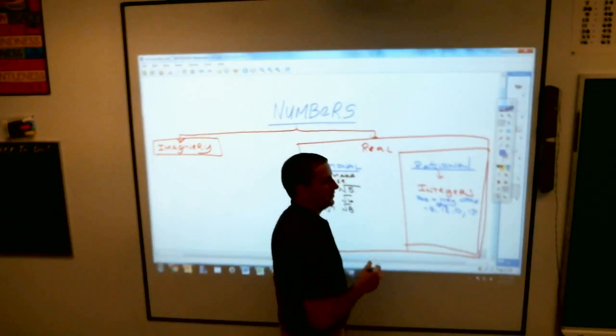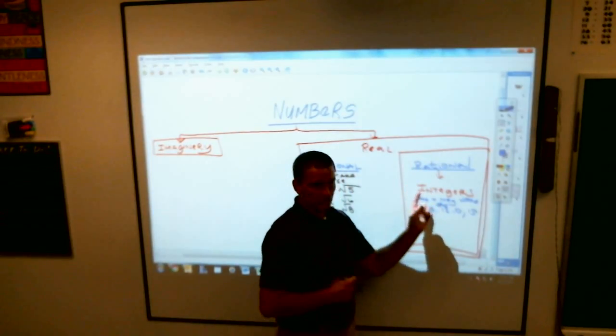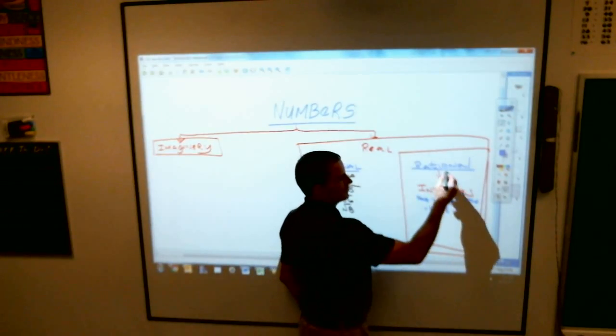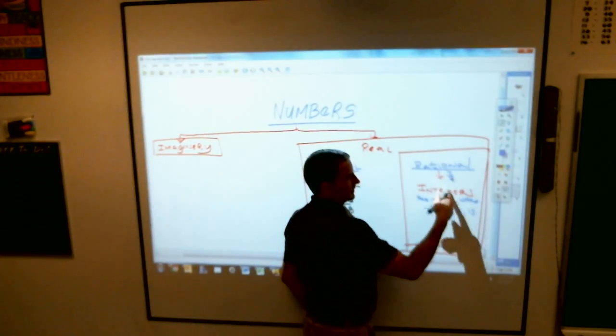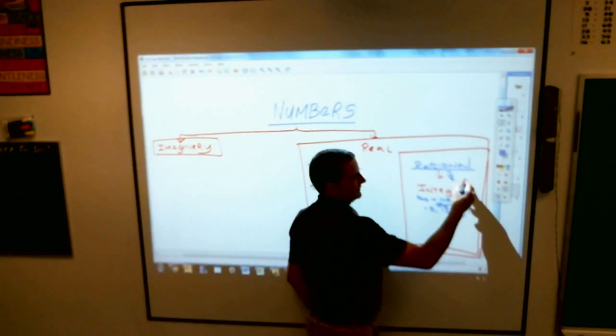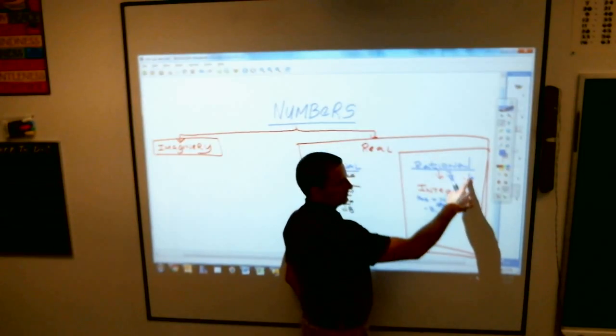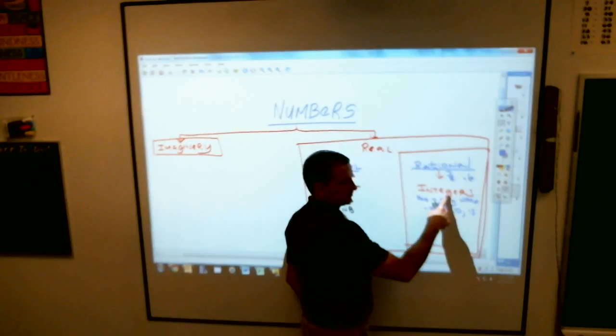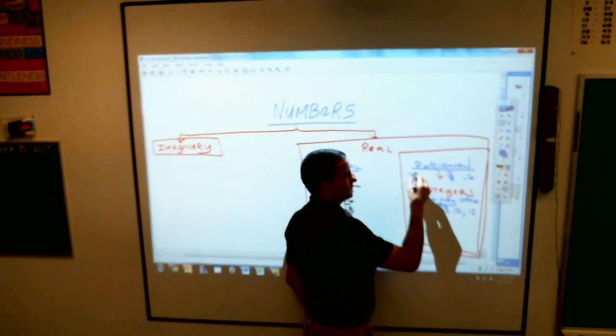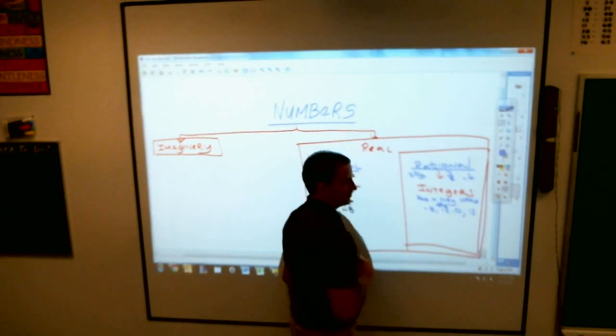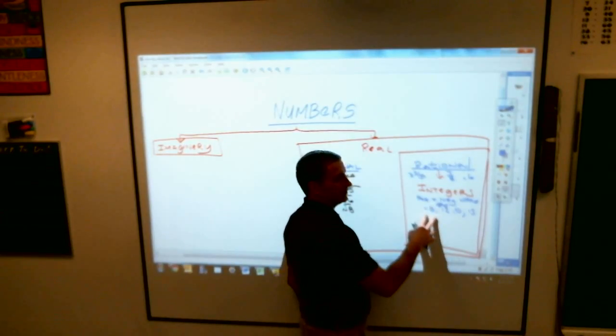What are some things that are rational but not integers? Any decimal, any fraction. 7 eighths is a rational number that is not an integer. 0.6, rational but not an integer. 3 and 3 fifths, rational but not an integer. Integers have to be their only whole numbers.